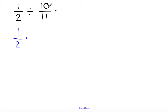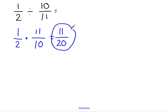The numerator goes to the denominator and the denominator goes to the numerator. So, 11 over 10 and then we multiply across. 1 times 11 is 11. 2 times 10 is 20. 11 over 20, there is not a way that I can simplify this at all. So, that is my final answer.